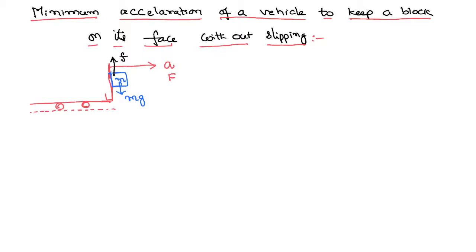Now I want to identify the acceleration with which we have to move the lorry. For the body, the lorry becomes a frame of reference. This frame of reference is having an acceleration and moving with a certain force. This kind of frame of reference is called a non-inertial frame of reference. When the frame of reference is non-inertial, we cannot apply Newton's laws directly on the body.